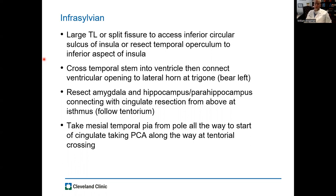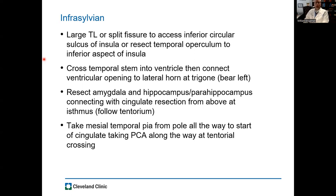Then resect the amygdala. When doing amygdala resections during temporal lobectomy we respect the superior aspect where it blends into the globus pallidus, but here you can be more aggressive in removing the amygdala. Then take the hippocampus and perihippocampal gyrus, following it back to the posterior cingulate resection at the isthmus. For anatomic removal, you can take the mesial temporal pia from the pole all the way around, meeting it at the falx and taking the pia there, completing the mesial disconnection.